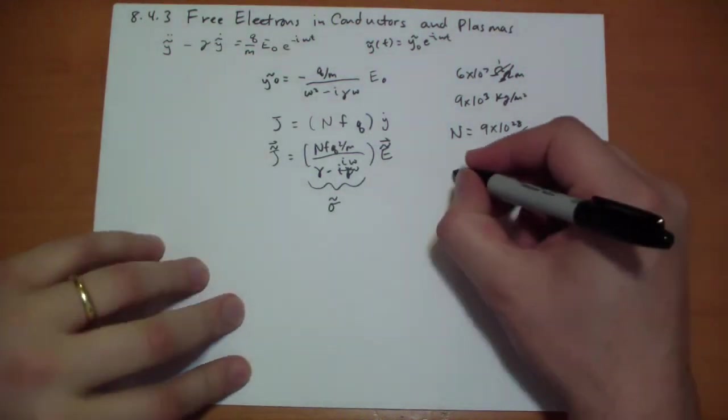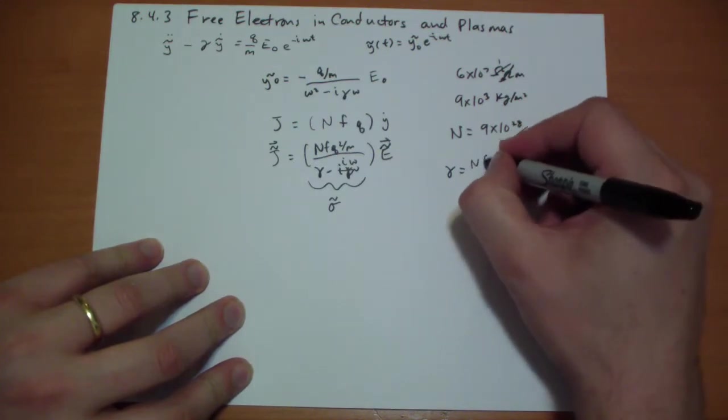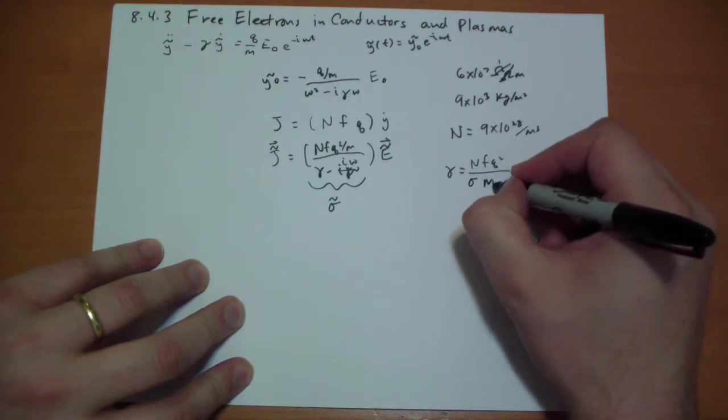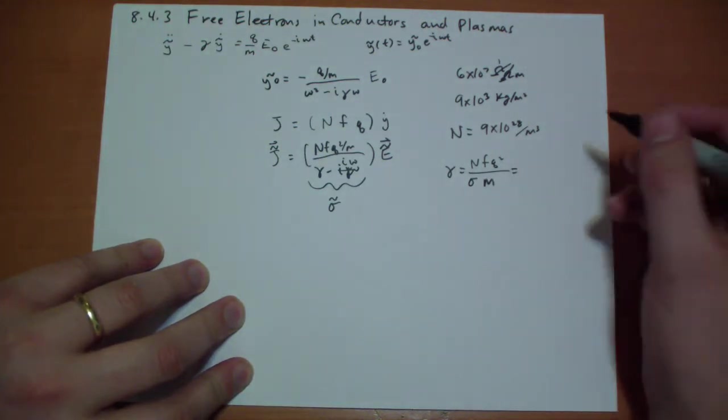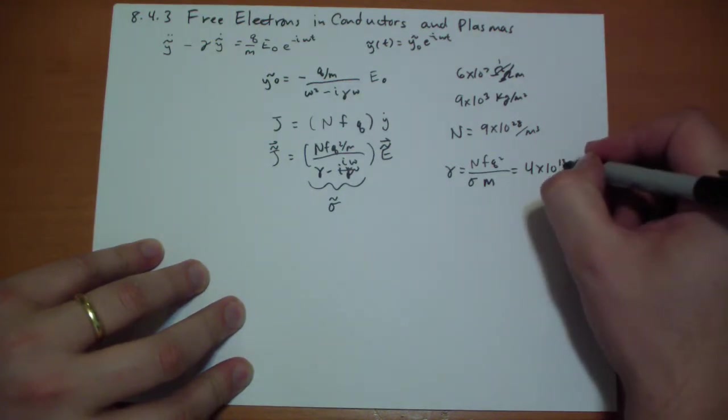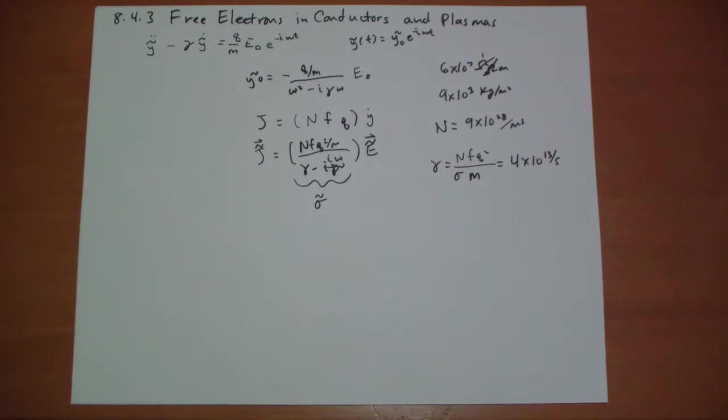And so when we calculate our gamma for copper, we use this formula, nfq squared divided by sigma at low frequencies times m, the mass of the electron, and plug that all in and we get four times ten to the thirteenth hertz. So that's in the infrared region, which implies that for frequencies lower than infrared, copper behaves like a very wonderful conductor. And something else happens at frequencies above infrared.